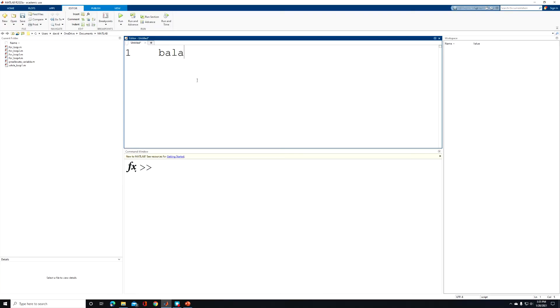So our balance has an initial value of $1,000. And our year is set at year zero. And this is because we're going to increment the year by one, such that after our first loop pass, the year would be one and the interest would accrue.